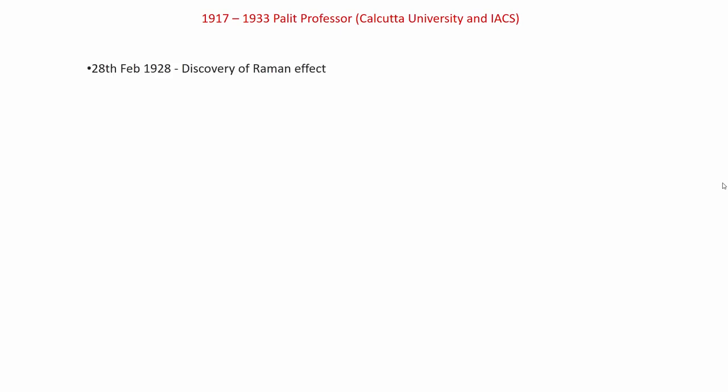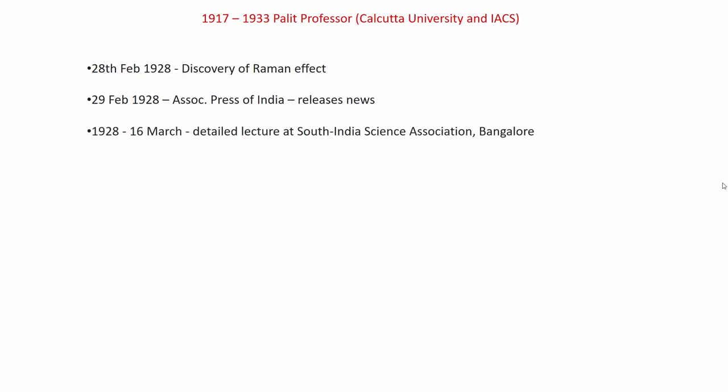Between 1917 and 1933 Raman continued to develop this effect further. The discovery happened on 28th February 1928, and Raman — being extremely well networked — immediately called a press conference with the Associated Press of India and released the news, which was published the very next day. He had already sent the paper in early February. On 16th March 1928, he gave a detailed lecture in Bangalore to the South India Science Association presenting all the evidence for the effect. This lecture was also published in the Indian Journal of Physics. On 31st March the Nature article appeared, establishing this effect and drawing the attention of the whole world.